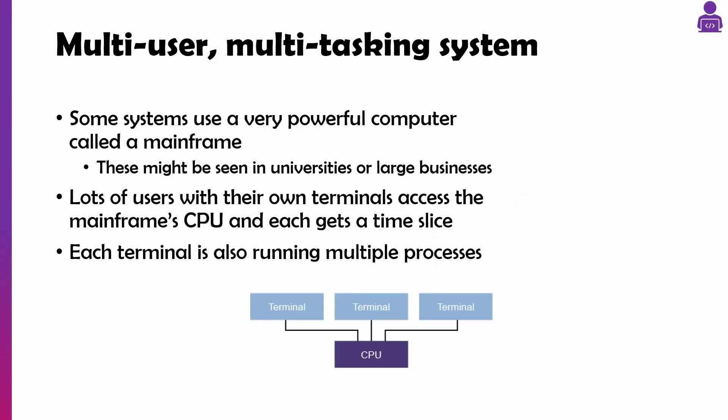You might also have a multi-user multi-tasking system, where you've got a really powerful computer called a mainframe — one really powerful computer with lots of computers connecting to it. IBM had mainframes, and for some time they even had a quantum CPU you could interact with. Each user gets a time slice to use a bit of the CPU, and it cycles through each terminal as and when they need that CPU power.